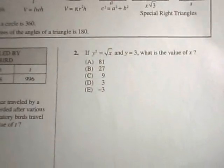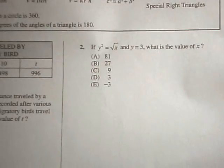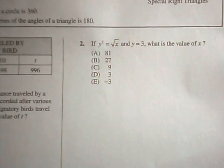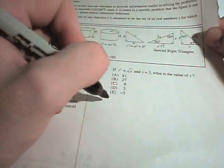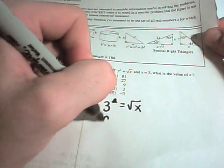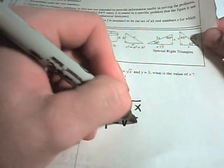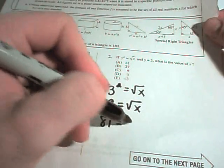Part 2, it says, if y squared equals square root of x, and y equals 3, what is the value of x? Well, this is one we can simply plug things in. So, it says 3 squared is the square root of x. Well, 3 squared is 9, and if we solve for x, we can just square both sides and get that 81 equals x. So, 81 will be our answer in that case.